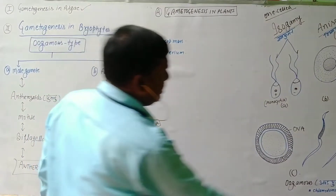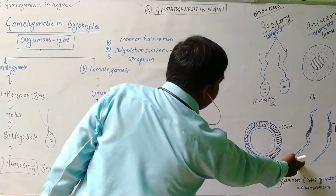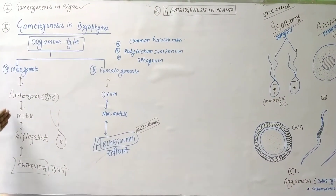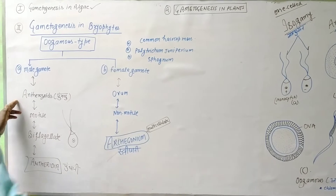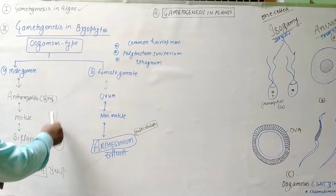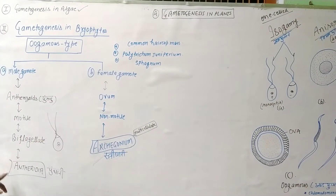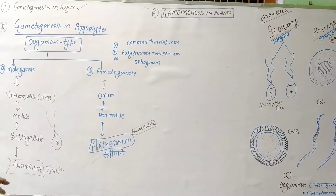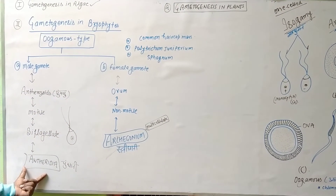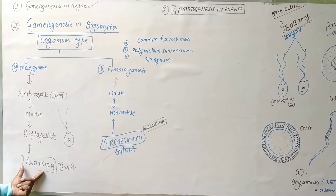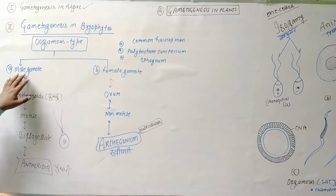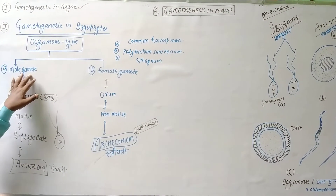This is the antherozoids — male gametes. Antherozoids male gametes are found in a special type of structure that is called antheridium. Antheridium produces a special type of male gametes.